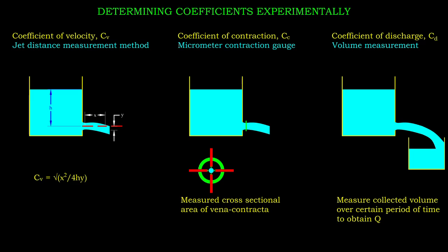As for the coefficient of discharge, we can first measure the volume of discharged liquid collected, then divide it by the time taken to obtain the actual discharge. Then, we take the ratio of this actual discharge to theoretical discharge to obtain cd.